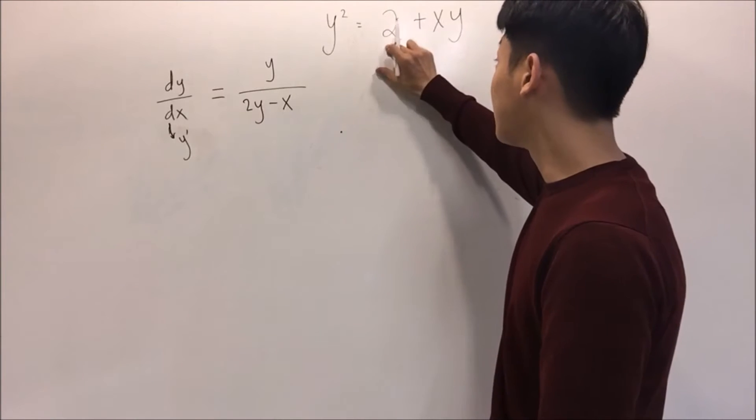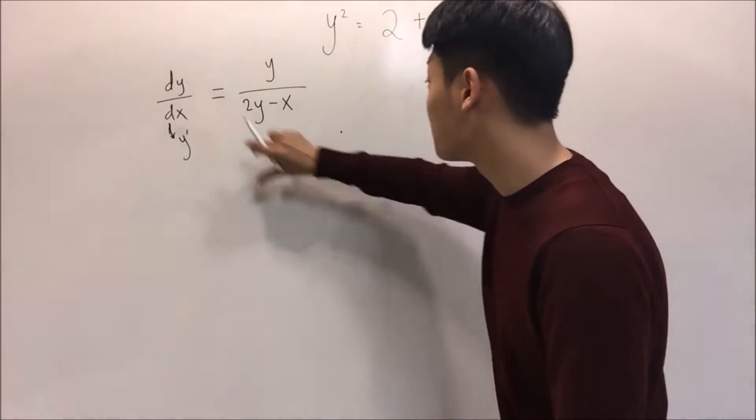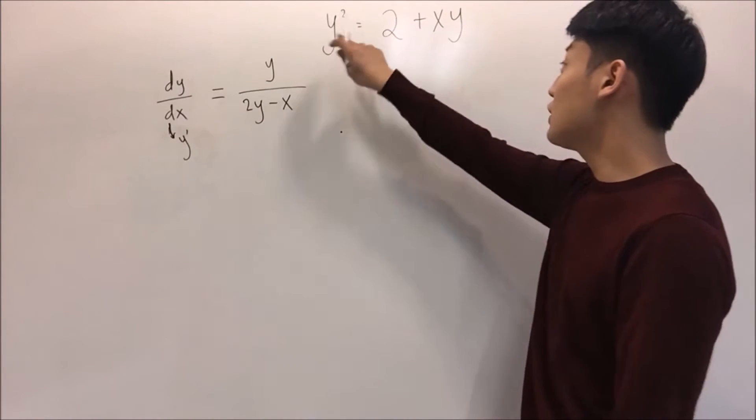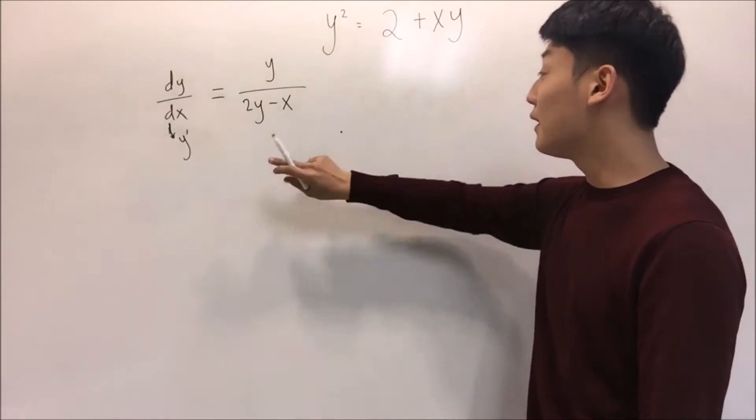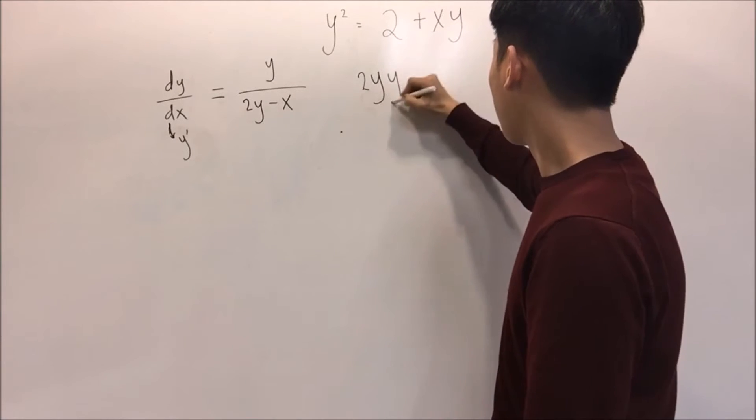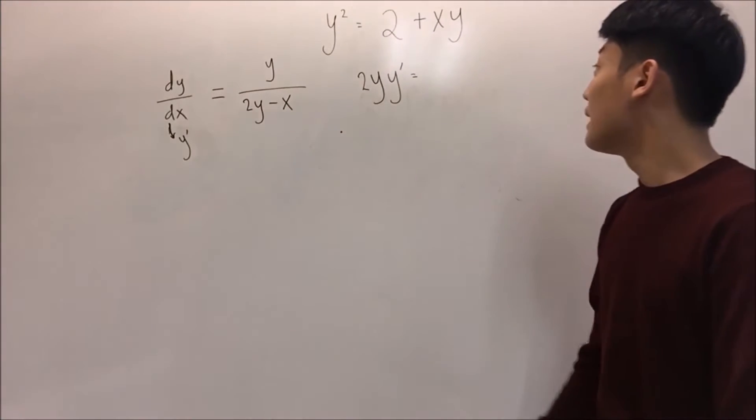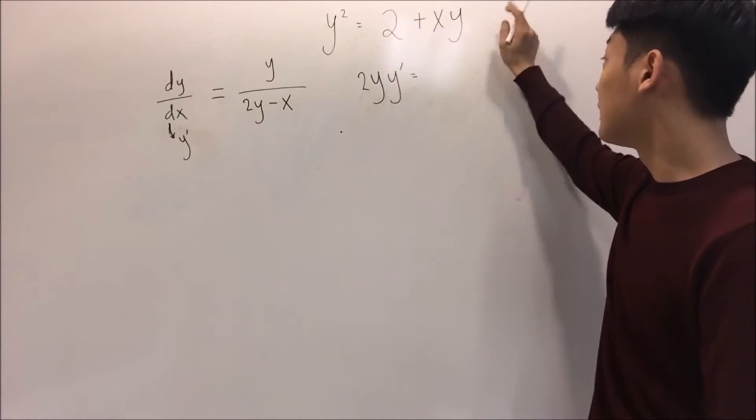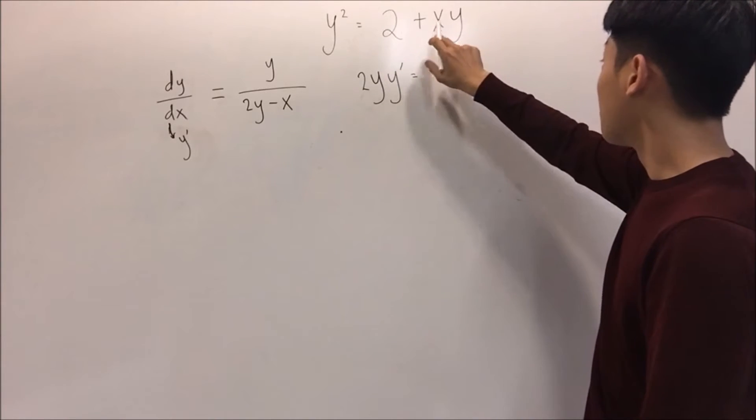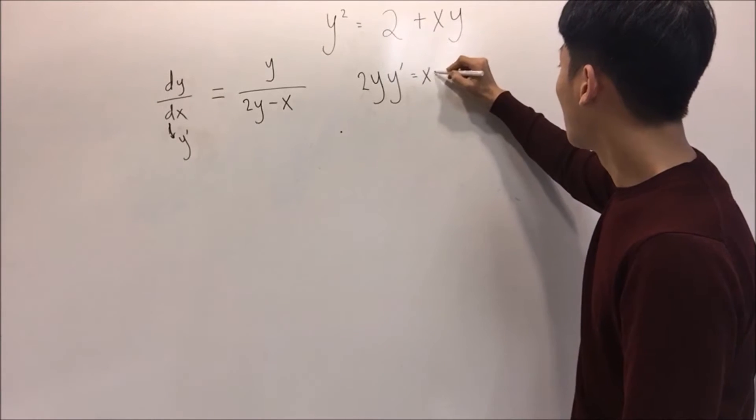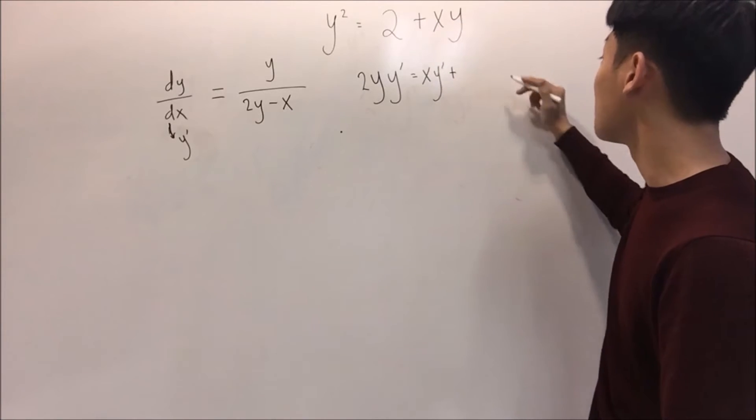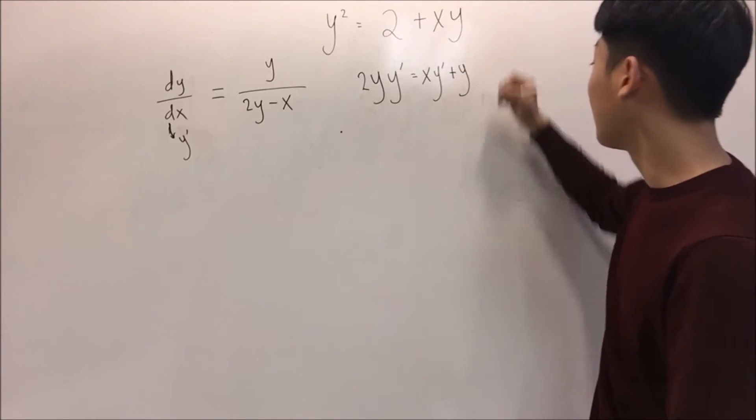We have to show or prove that the slope of this function becomes this. What do we use? dy/dx, differential equation. When we differentiate y squared with y, it will become 2y y prime. Because this is a real number, this cancels out. With the product rule, it will become x y prime plus, now y stays the same and x differentiates, which will become y.